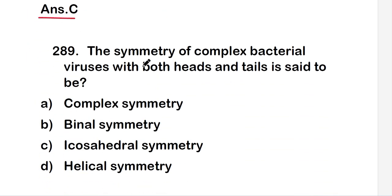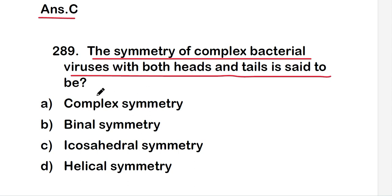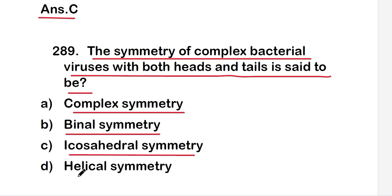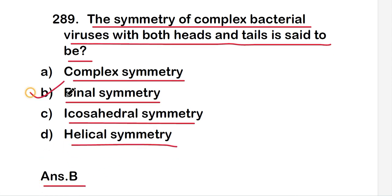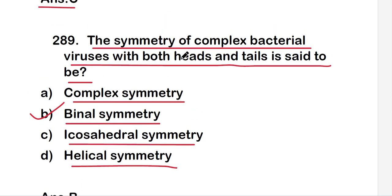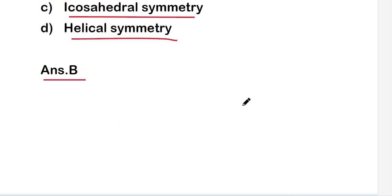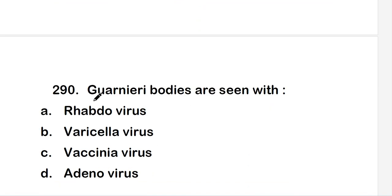Next question: the symmetry of complex bacterial viruses with both heads and tails is said to be complex symmetry, binal symmetry, icosahedral symmetry, or helical symmetry? The right answer is option B, binal symmetry. Binal symmetry refers to viruses where two types of symmetry are present in a single virus — seen in complex bacterial viruses with both head and tail.